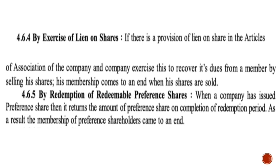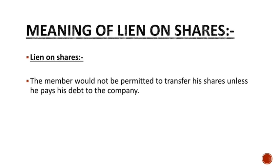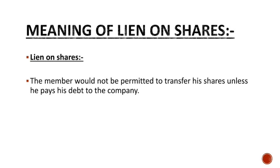The fourth method is by exercising lien on shares. First, understand what lien on shares means: a member is not permitted to transfer his shares unless he pays his debt to the company. The difference between lien on shares and forfeiture of shares is that in both cases the member has not paid the full installment, but the company's solutions are different. With forfeiture, the company cancels the shares, which gives the company a negative impression in the market. That is a disadvantage of forfeiture.